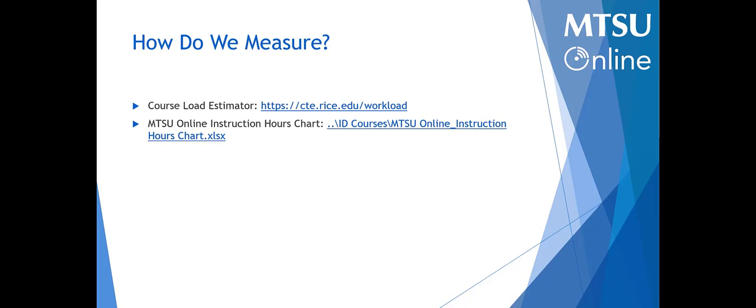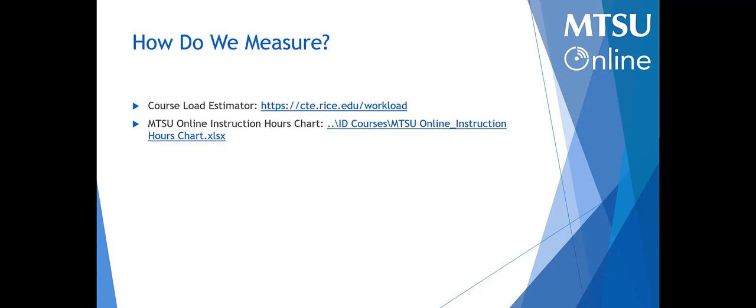Think about the math for a three-week course: 135 hours divided by 21 days is roughly 6.5 hours per day, every day including weekends. Imagine taking two three-week classes in a summer session — the numbers don't work. And for a full-time student load of 15 credit hours, 135 hours per course works out to be a full-time job. Some learners do better in accelerated formats than others, and it's worth having that conversation with students.